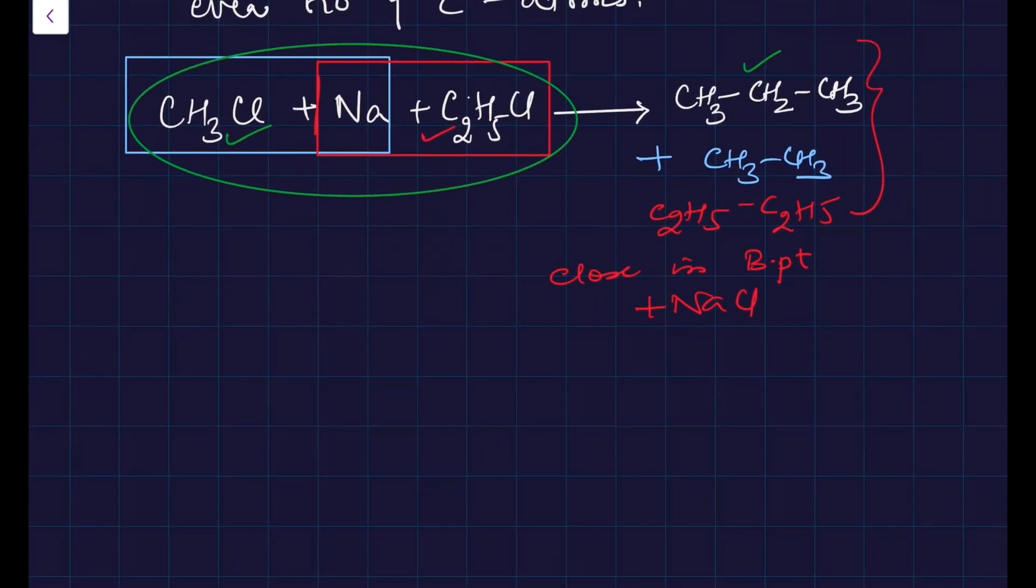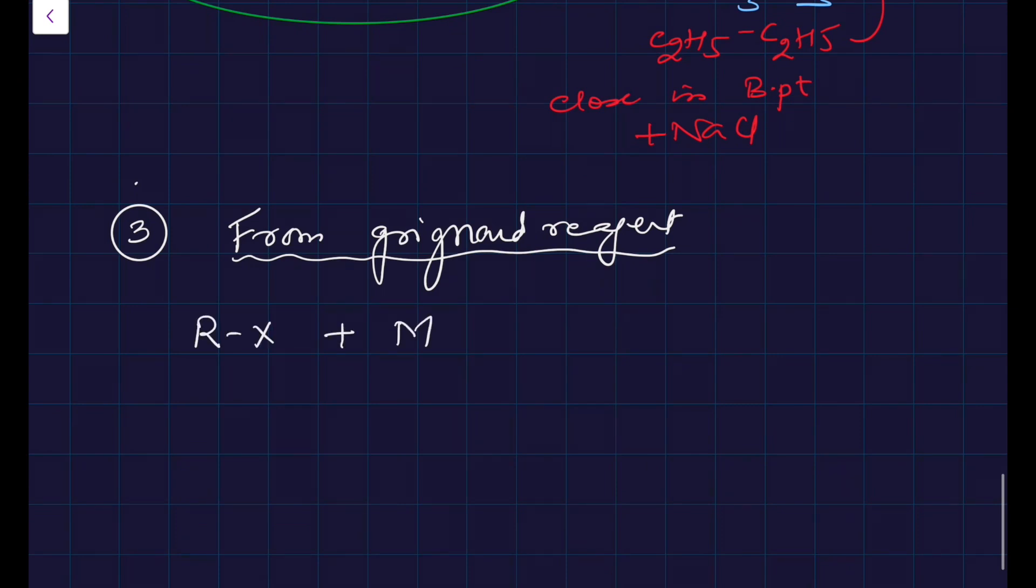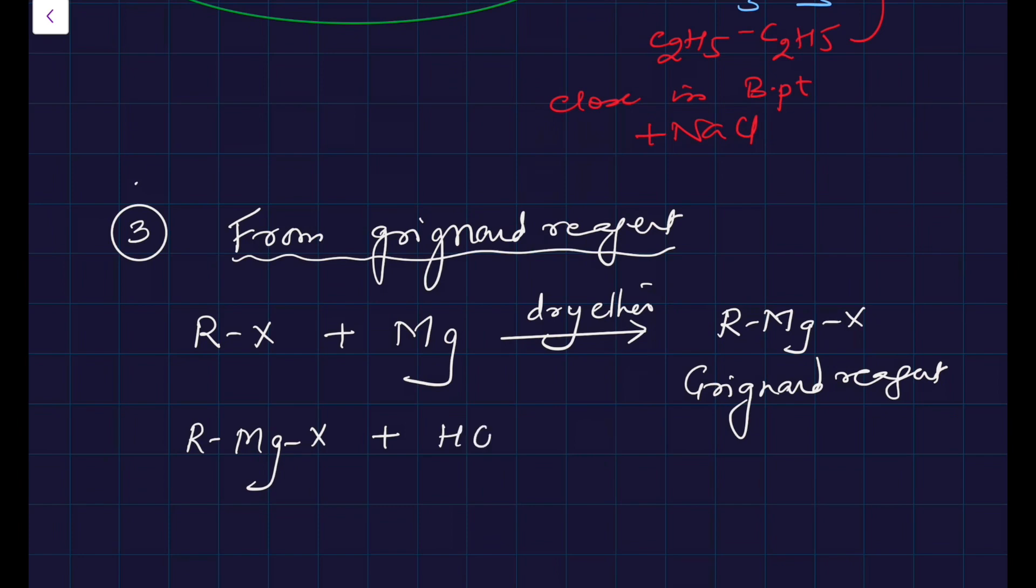Let us move on to the third one with the help of Grignard reagent. What we do is we take alkyl halide, treat it with magnesium in dry ether. Again, there is no moisture. I will tell you why we do not take moisture. What you get is Grignard reagent R-Mg-X. This Grignard reagent when added to water will give hydrocarbon. See, R has negative charge, H has positive charge. R minus abstracts this proton to give you RH which is hydrocarbon, and you get magnesium hydroxyl halide as byproduct.